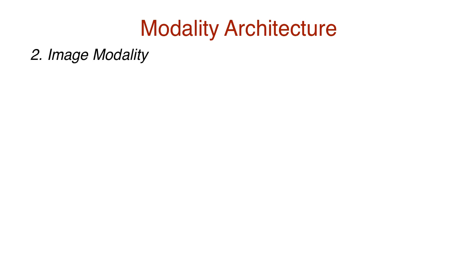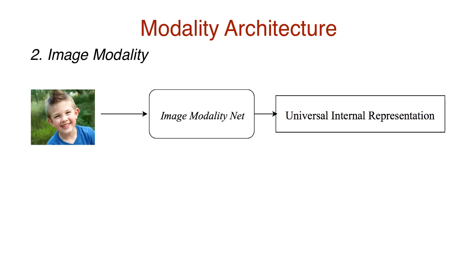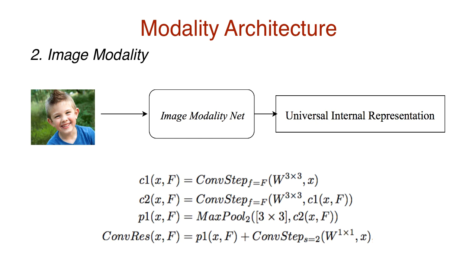Now, with image modality nets, we convert images to a universal internal representation. Specifically, we increase the input depth using residual convolution blocks. More specifically, we apply F 3x3 filters to the input image X and get the convolved C1. We repeat the same convolution step and then apply max pooling with a 3x3 window and a stride of 2. This pooled output is added to the 1x1 convolution on the input. The two 3x3 convolutions, max pooling, and 1x1 convolution constitute the residual convolution block, convres, as we see here.